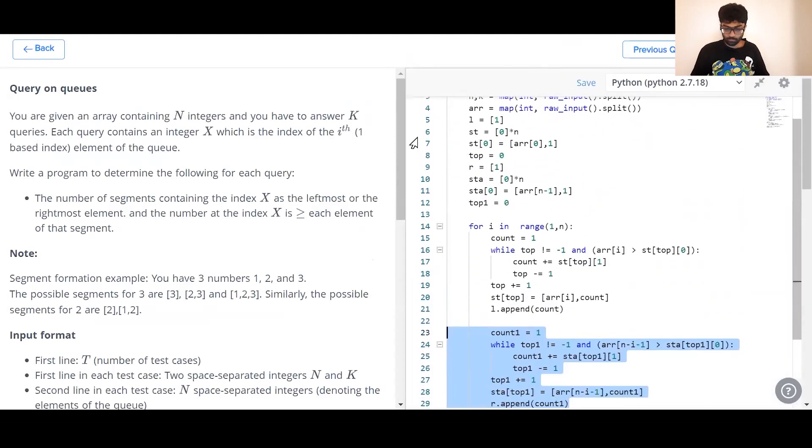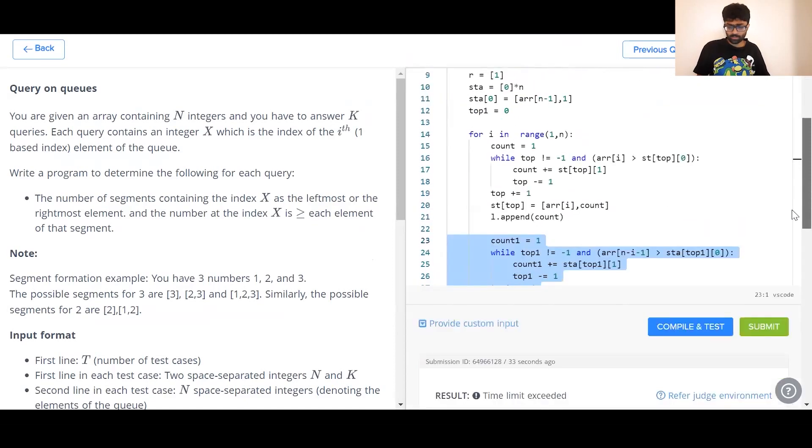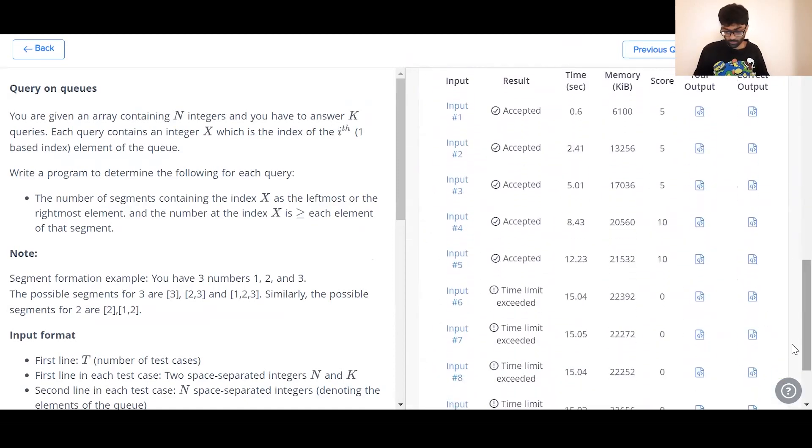This right here is an example of code in which we've calculated L and R separately. Using two different for loops. One for loop running from left to right and the other from right to left. The complexity is the same but as you can see our time limit has been exceeded. This takes 50% longer to run as opposed to the code we've just discussed.